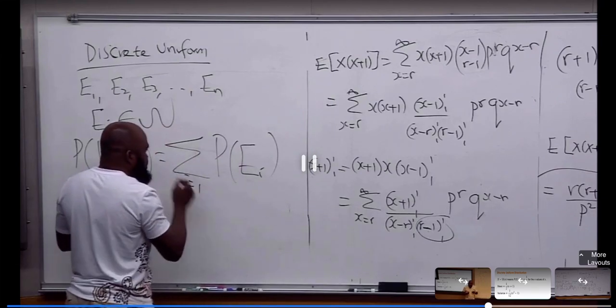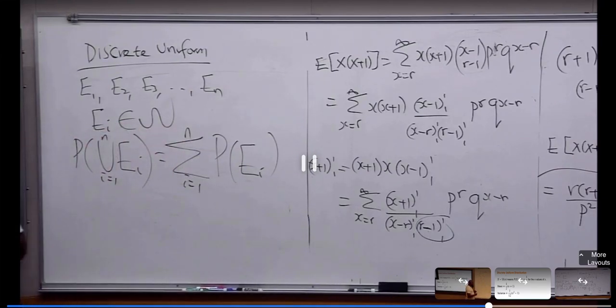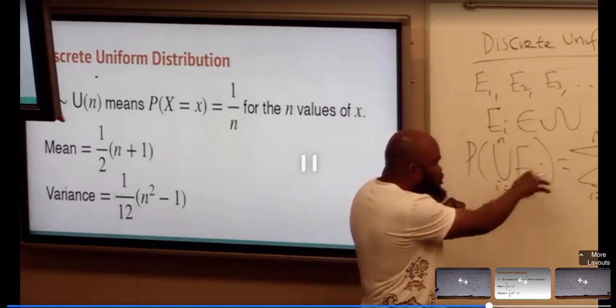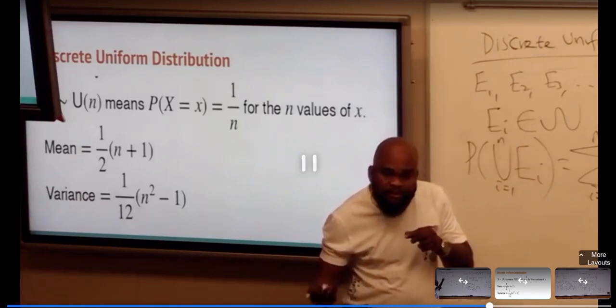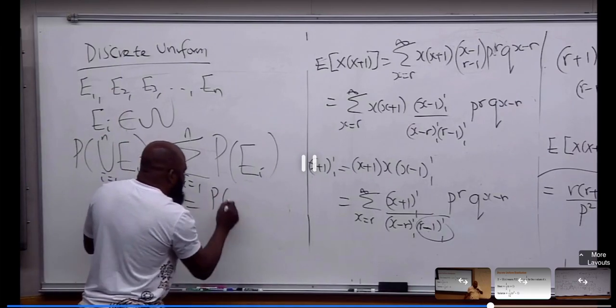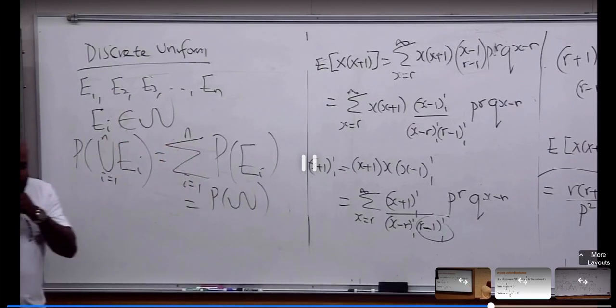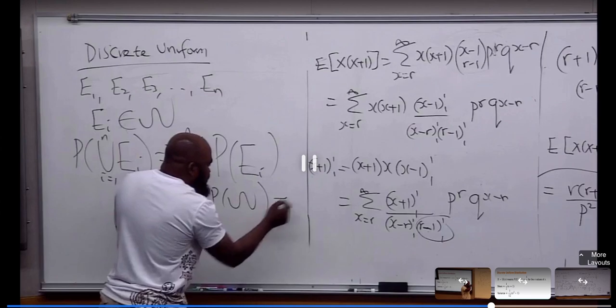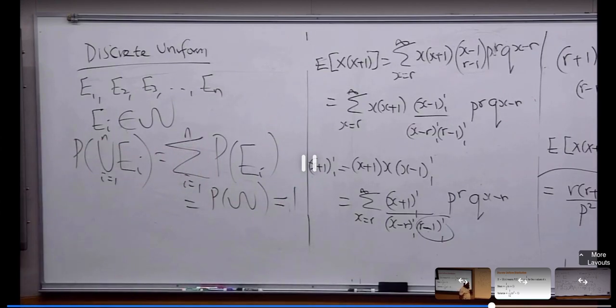When you have this, and because E1 to EN constitute the sample space, this is going to be equal to the probability of the sample space. The probability of the sample space is actually equal to 1.